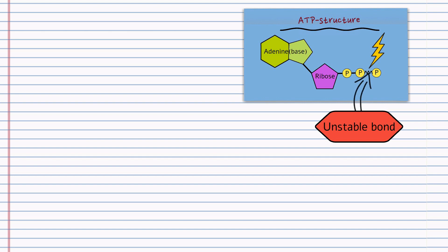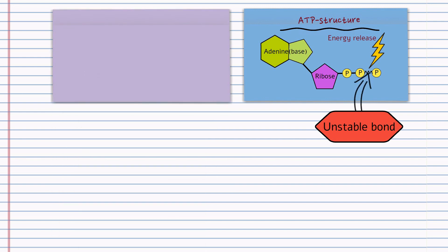From the diagram, you can see that that third phosphate is attached with an unstable bond. So this bond is very unstable and is easily broken. And when it's broken, it releases energy. And that is the key to ATP.